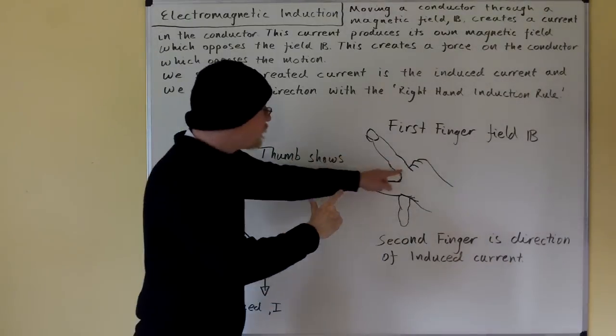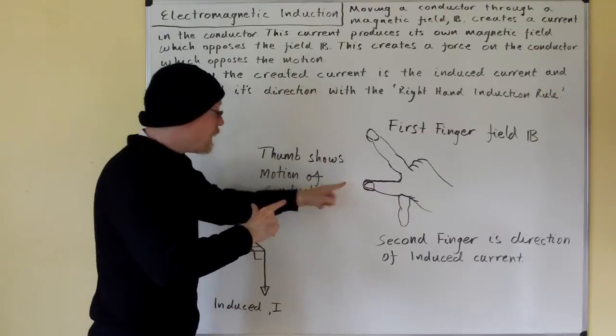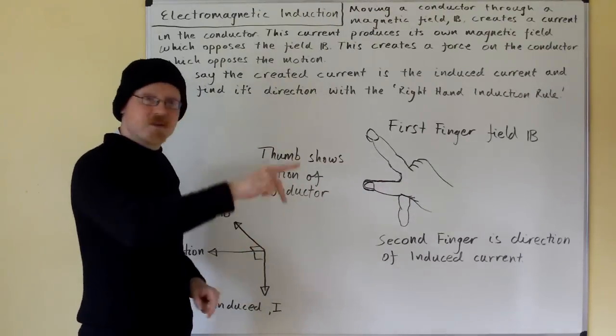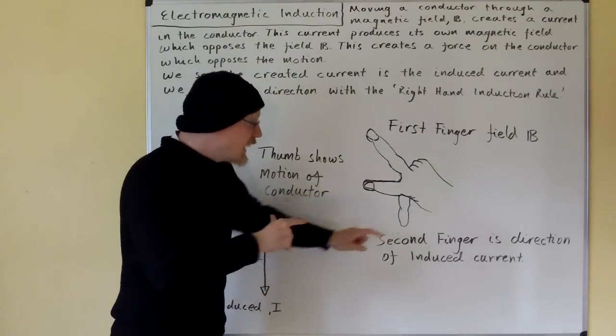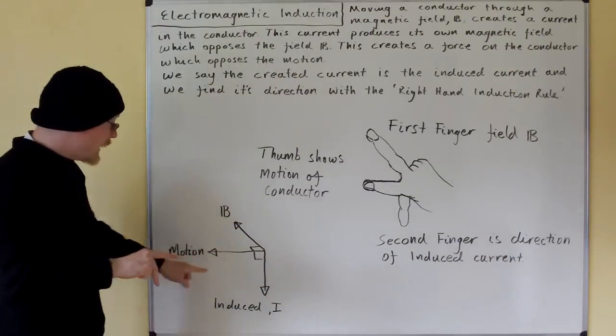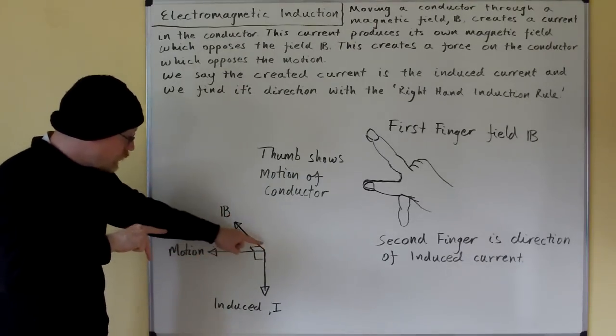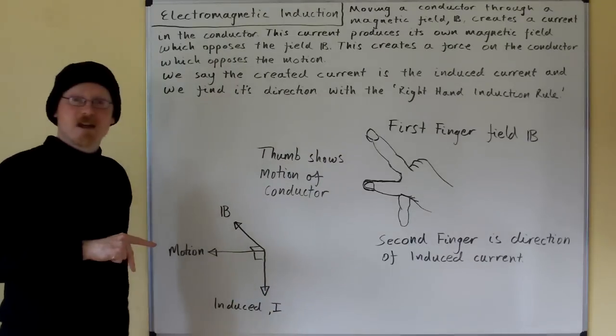So here is our first finger representing the field direction. Here is our thumb representing the motion of the conductor and our second finger is showing us the direction of the induced current. So here we have it in vectors. Motion in this direction through a field in that direction will induce the current downwards in this direction.